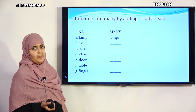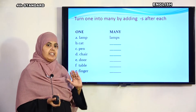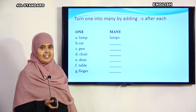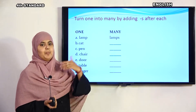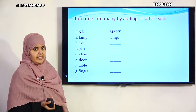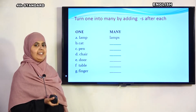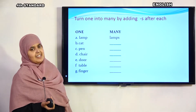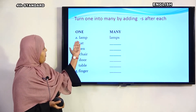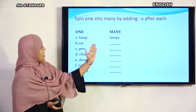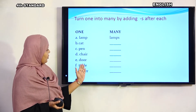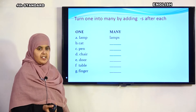Turn one into many by adding 's'. How do we change singular to plural? We add 's'. Singular — plural. Examples: lamp — lamps, cat — cats, pen, chair, door, table, finger. I will show you the next slide.